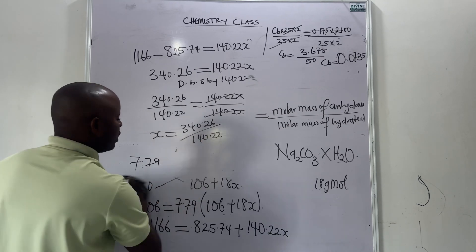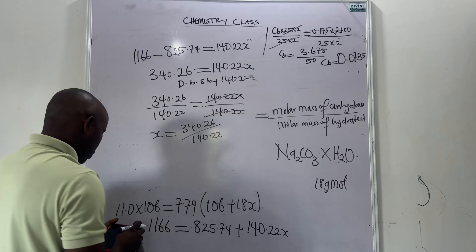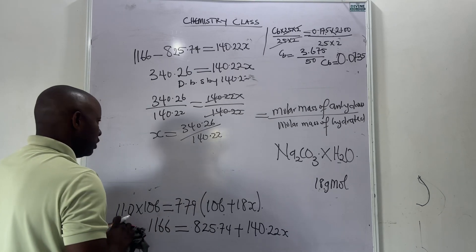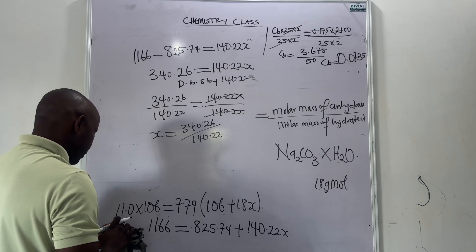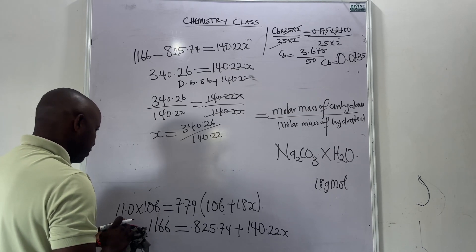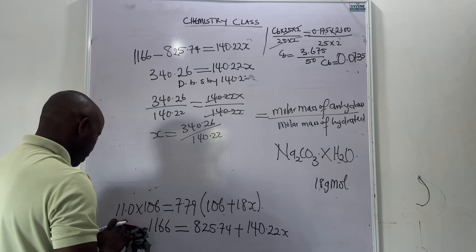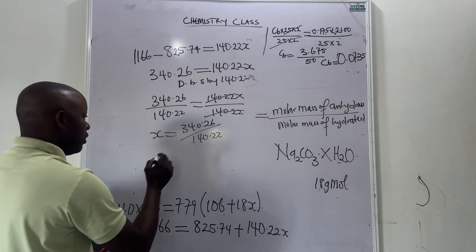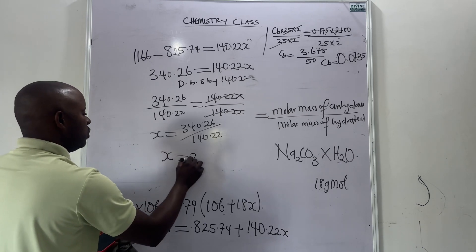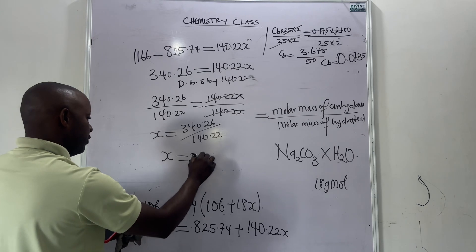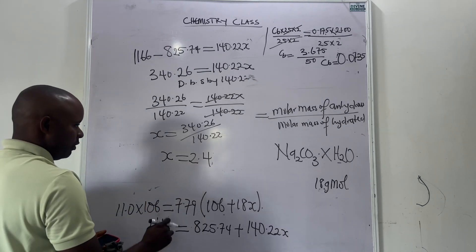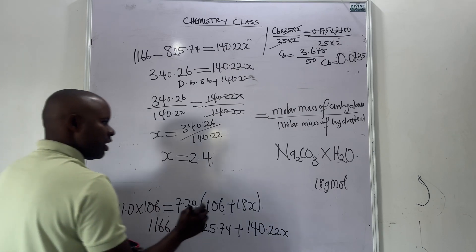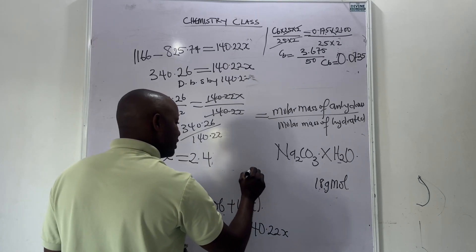Solving for water of crystallization: S equals 340.26 divided by 140.22, which gives S equal to approximately 2.4, which we round to 2.